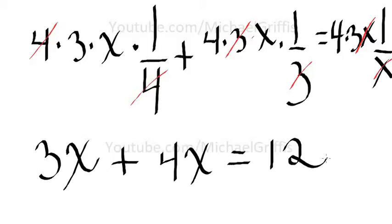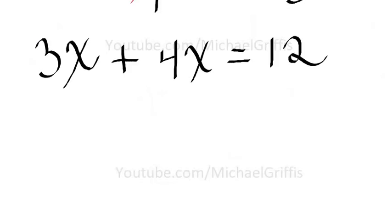Now we solve for x in the problem. Solving for x, and since 3x and 4x are like terms, we have 7x is equal to 12.